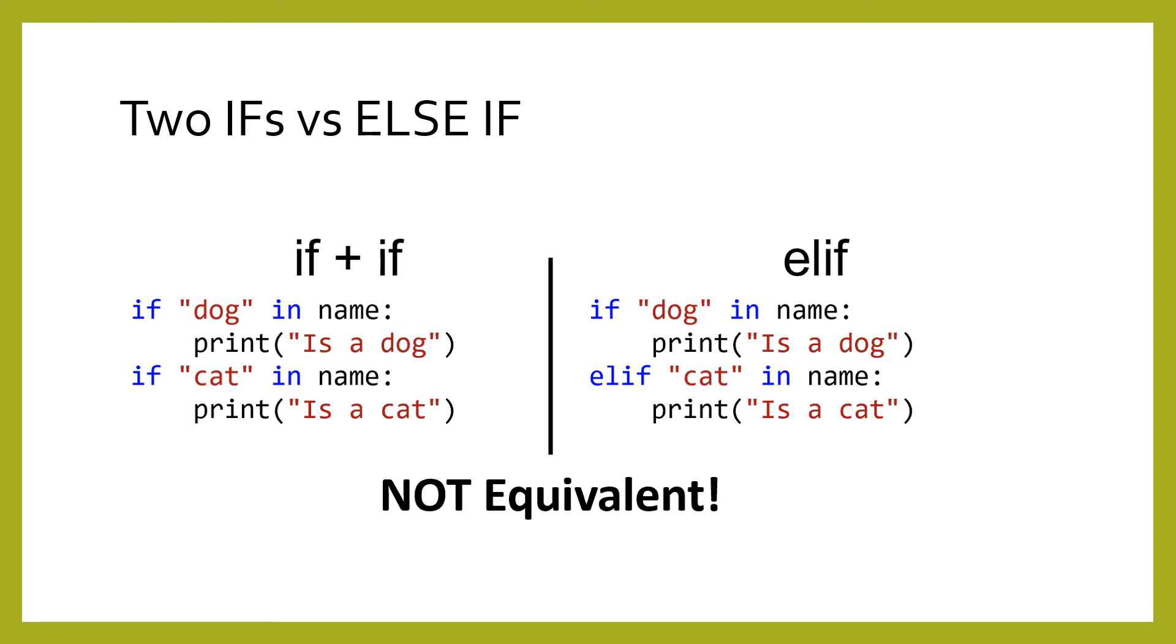The following two pieces of code may look similar, but they are quite different. The code on the left has two if statements, and both will always be evaluated and potentially executed. The code on the right has an elif statement, and the second will only be evaluated if the first one evaluates to false.